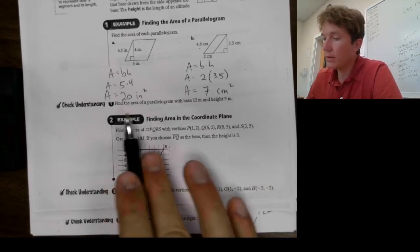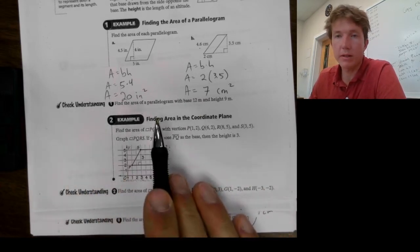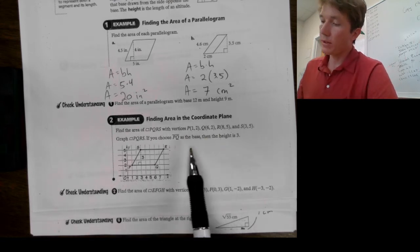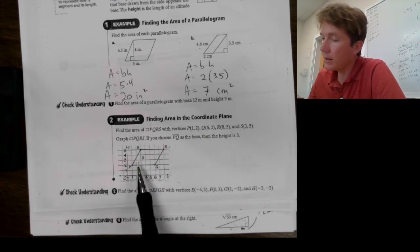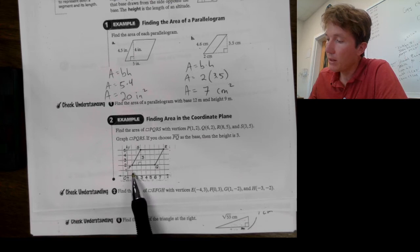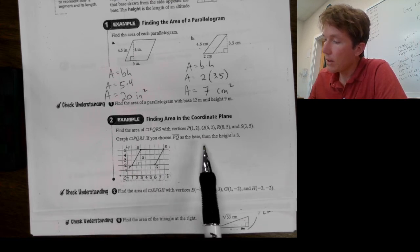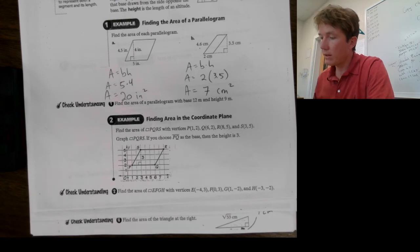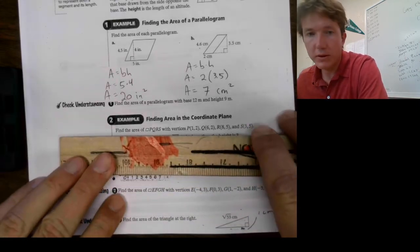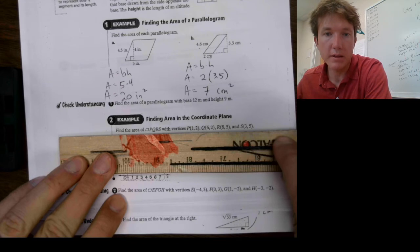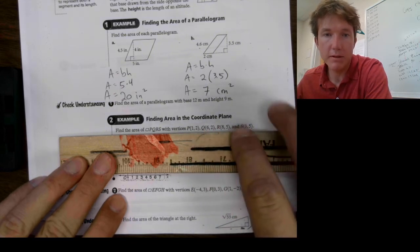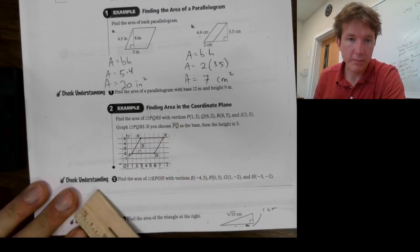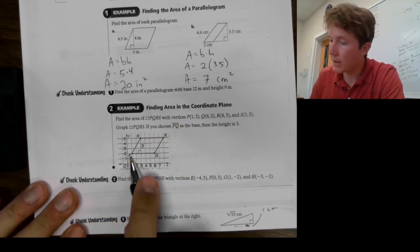Let's just move on. You can try these check understandings if you want. I'm not. I'm just gonna move on ahead. Example 2. Find the area in the coordinate plane. You wanna find the area of this parallelogram with the given vertices. So, this type of problem, this is what they'll give you. They'll just give you that. So, you need to plot. You need to plot these points. So, that's what they did. They graphed it.